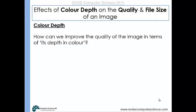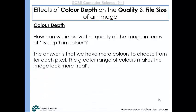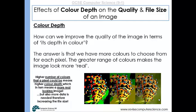How can we improve the quality of an image in terms of its colour depth? The answer is that we have more colours to choose from for each pixel. A greater range of colours makes the image look more real. A higher number of possible colours that a pixel could be means higher colour depth, which in turn means a more real-looking image. But if you've got more data for each pixel — longer binary numbers representing each pixel — it means more data, so the file size increases with an increase in colour depth.